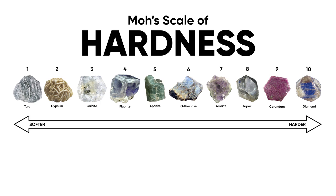The way we test hardness is by trying to rub mineral samples against one another to see which is harder and which is softer, or to rub them against some known surface or substance. Something like the copper found in a penny, which has a hardness of 3, or a piece of glass, which is commonly used and has a hardness of 5.5.